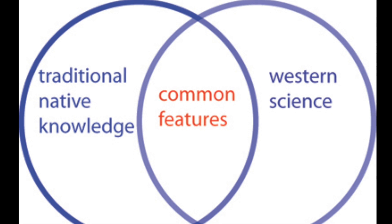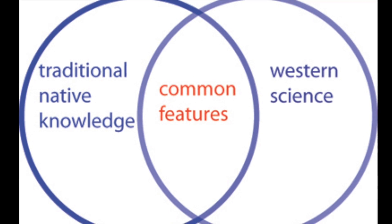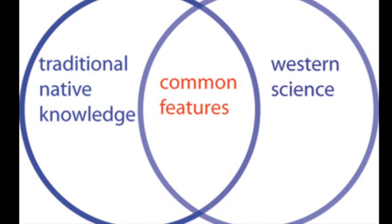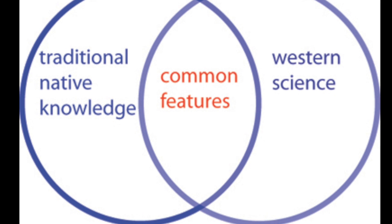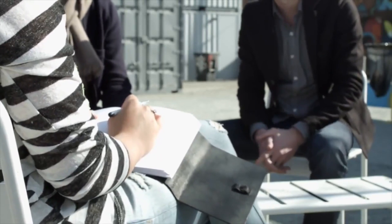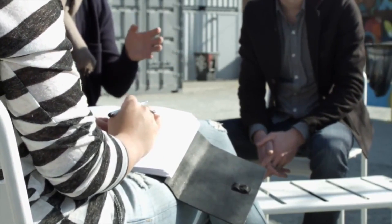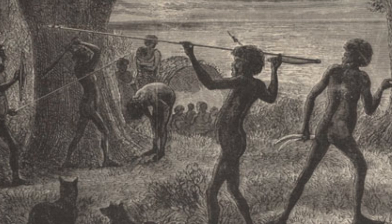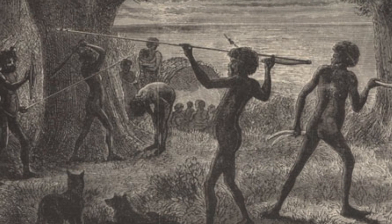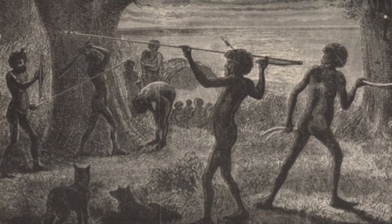Unaipon defied the stereotypes imposed on Aboriginal peoples as he was multilingual, speaking at least Latin, Greek, and English. David became a rarity as he was in his own category which encapsulated both Western science and Indigenous knowledge. Unaipon valued Western science and technology as he saw mastering these skills might transform views of him and all Indigenous Australians.